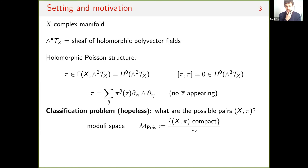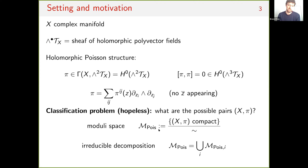The motivating problem today is that of trying to classify complex Poisson manifolds — what are the possible pairs up to isomorphism? This is a completely hopeless problem; there are far too many. But at least when X is compact, they're organized into a moduli space parametrizing isomorphism classes, which has some decomposition into irreducible components. For example, Poisson structures on the projective plane form one irreducible component, while Poisson structures on projective three-space form six. For projective spaces of higher dimension there's relatively little known about the classification.